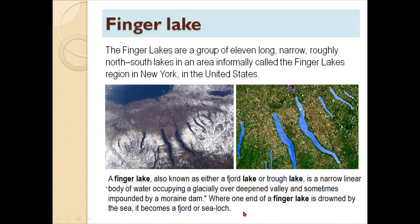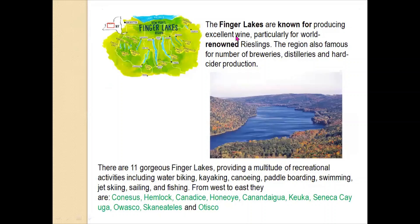Where one end of a Finger Lake is drowned by the sea, it becomes a fjord or sea loch. You might know how a fjord is formed — when lakes open into the ocean or bigger water bodies, they become fjords. So Finger Lakes are glacially formed lakes located in the New York region.